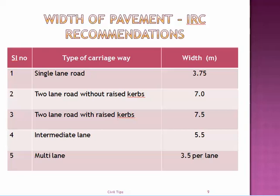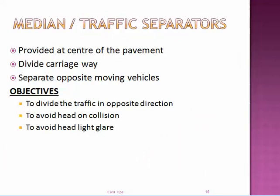IRC also recommends various width values for roads. For a two-lane road without raised curbs it is 7 meters; for a two-lane road with raised curbs the width should be 7.5 meters. Intermediate lanes are constructed with a width of 5.5 meters, and for multi-lane roads, 3.5 meters per lane.